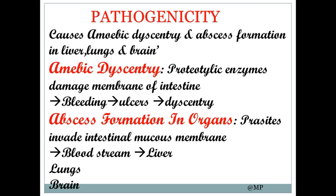Pathogenicity: Entamoeba histolytica causes amoebic dysentery and abscess formation in the liver, lung, and brain. In amoebic dysentery, proteolytic enzymes damage the membrane of the intestine, causing bleeding, ulcers, and dysentery. In abscess formation in organs, parasites invade the intestinal mucous membrane, then enter into the bloodstream and then into the liver, lungs, and brain.